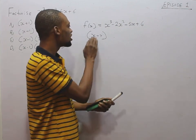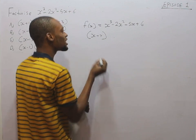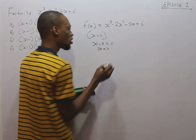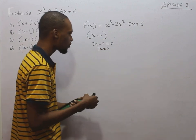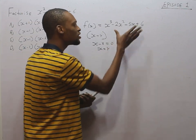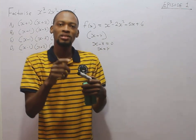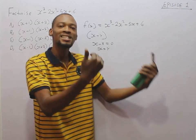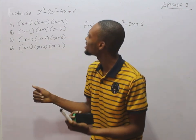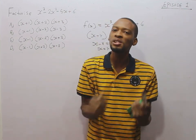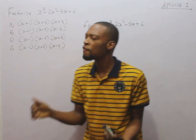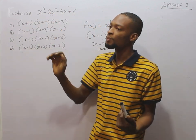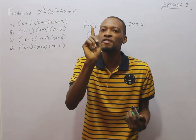Given s minus r, this is the same thing as s minus r equals 0, which means s equals r. So any value of s you substitute here that gives you 0 is the first factor. In summary, we are given a polynomial to factorize without any factors provided. Simply look for the first factor by substituting any number into the expression — anyone that gives you 0 means you've gotten the first factor.